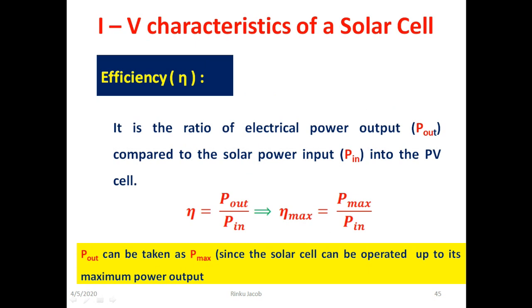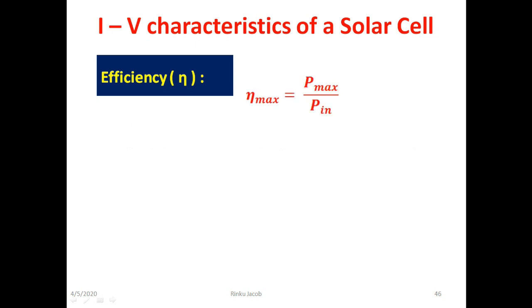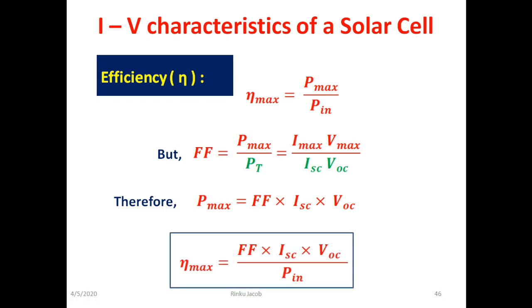Now we move on to the topic efficiency of a solar cell. It is defined as the ratio of electrical power output denoted by Pout compared to the amount of solar power input denoted by Pin onto the solar cell. So the equation for efficiency is given by eta equal to Pout divided by Pin. We are interested in getting maximum efficiency, which is possible only when the output power from the solar cell is maximum. So eta maximum equal to Pmax divided by Pin. Now to find Pmax, we make use of fill factor equation which is given by fill factor equal to Pmax divided by Pt. Rearranging in terms of Pmax, we get Pmax as the product of fill factor, ISC and VOC.